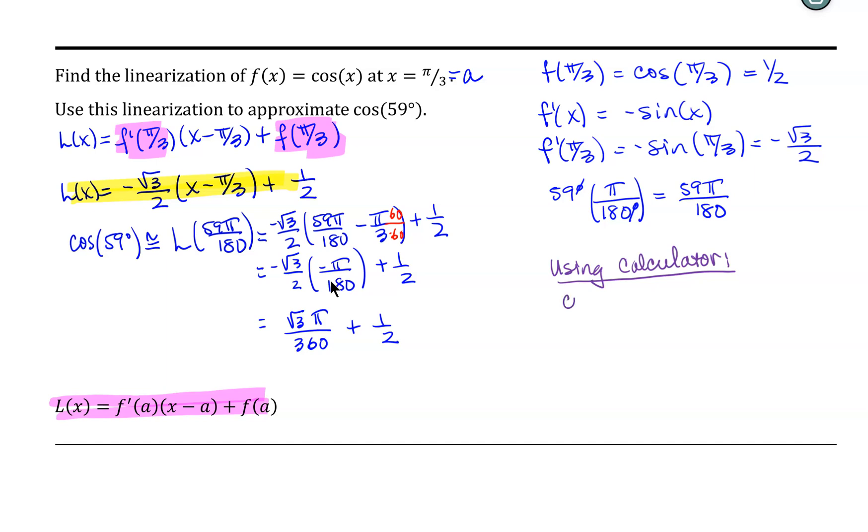If I use a calculator and I ask what is the cosine of 59 degrees, I get approximately 0.515038.